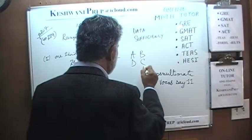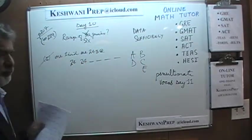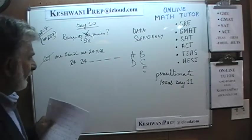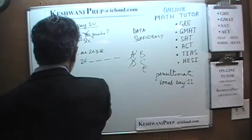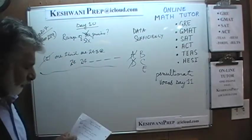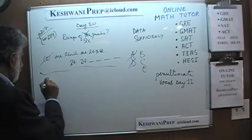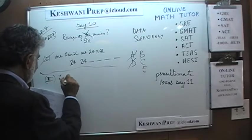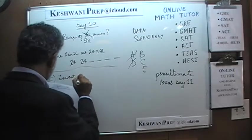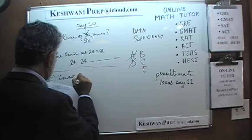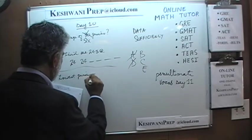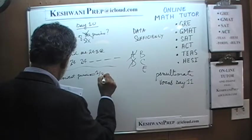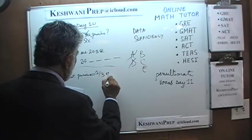The first statement by itself is not sufficient. That tells us the answer cannot be A or D — it will have to be either B, C, or E. Let's look at the second statement. The second statement tells us that the lowest price is equal to one third of the highest price.